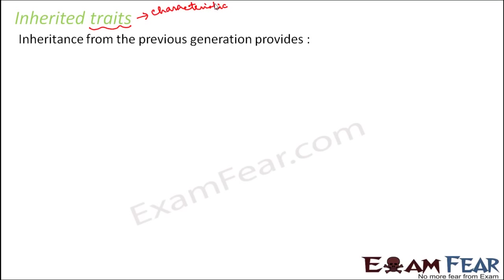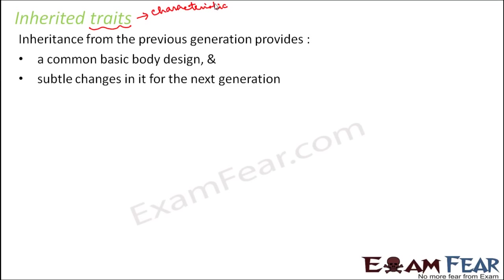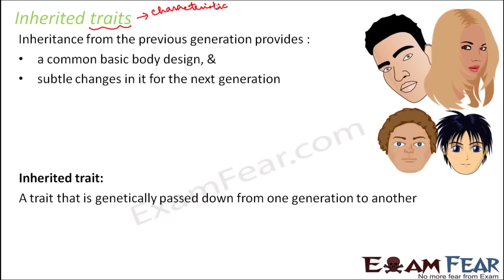So when we say inherited traits — inheritance from a previous generation provides, first of all, the common basic body design. That is why all of us look like human beings; by looking at us, everybody can tell we are human beings because the basic design is the same. It will also give some changes for the next generation.